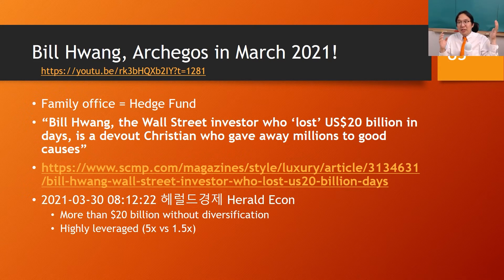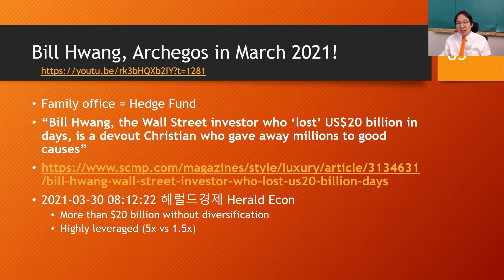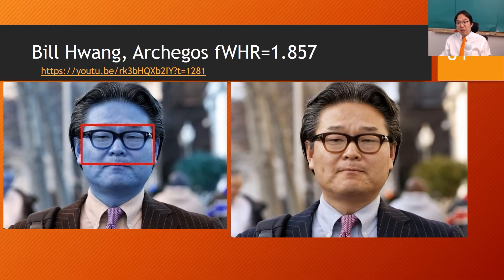Why did he go to five times leverage? He was status-seeking. You can see it in his face. His facial masculinity, when you run it through my website, gives an FWHR score of 1.857.